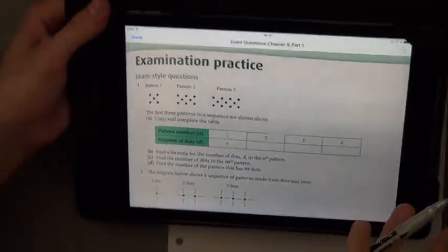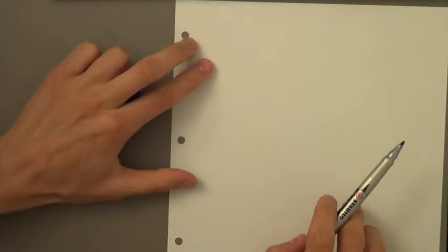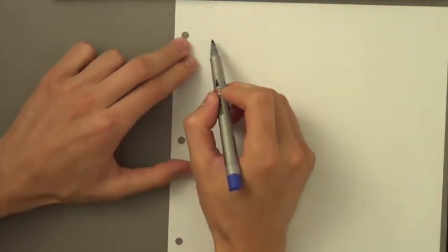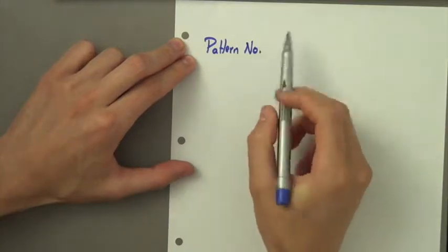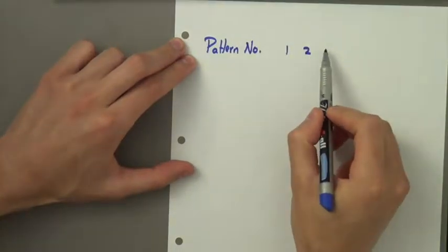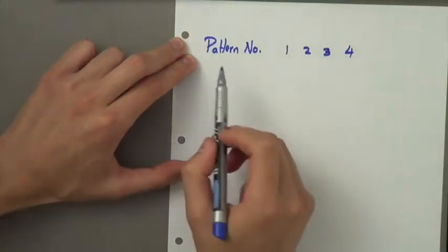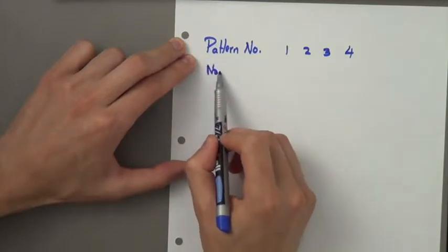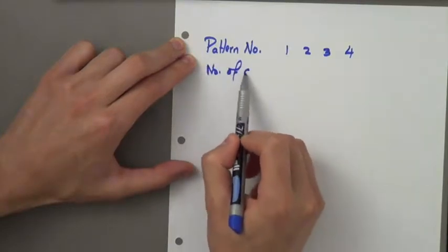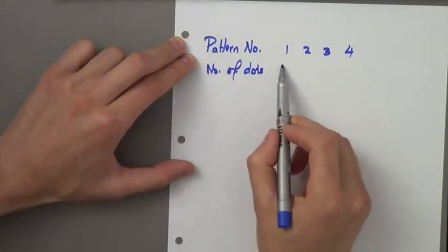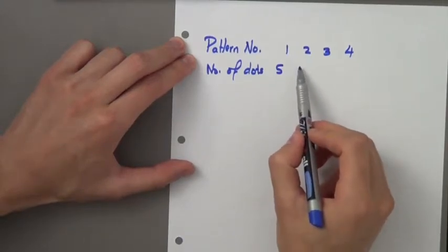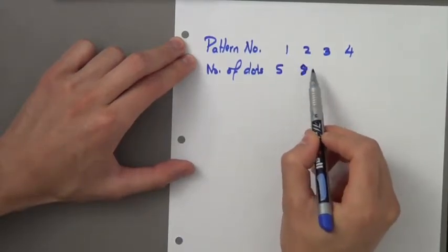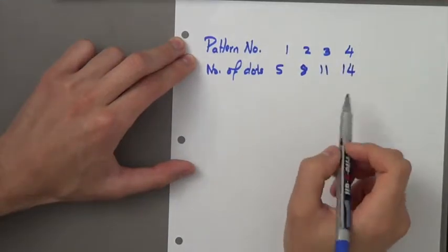To fill this table, the pattern number is 1, 2, 3, 4, and then the number of dots. The first one's got 5, and then I'm basically going to add 3 each time. So it's going to be 8, 11, and 14.